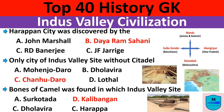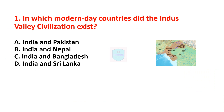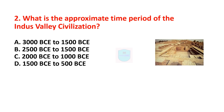Welcome to X-Ray. Today we will discuss the Indus Valley Civilization, one of the important ancient civilizations of India. First question: in which modern-day countries did the Indus Valley Civilization exist? The correct answer is India and Pakistan. Next question: what is the approximate time period of the Indus Valley Civilization? Correct answer is 2500 BCE to 1500 BCE.